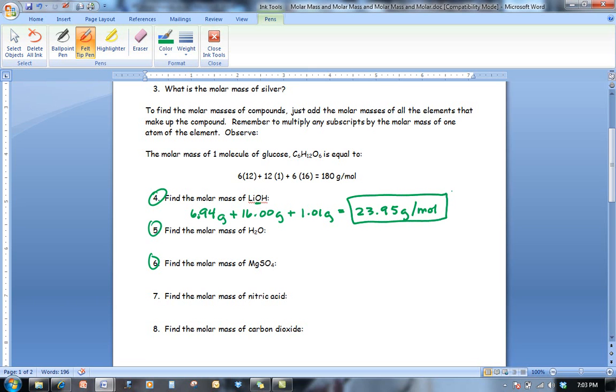So what this means is that if you weigh out 23.95 grams of lithium hydroxide, you know that you have a mole of lithium hydroxide. Another way of saying that is that one mole of lithium hydroxide weighs 23.95 grams. We also know that since a mole of lithium hydroxide weighs this much, we know that 6.02 times 10 to the 23rd molecules of lithium hydroxide weighs that much. So we can glean a lot of information just by knowing the molar mass of something.